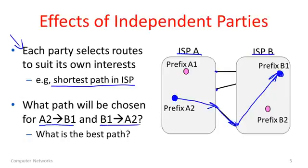Now what about the path from B1 to A2? Starting in B1, I similarly want to go through ISP A to reach prefix A2. I could use any of the three exit points. The closest one is the top one, so I go there, cross the link, and within ISP A I go directly to prefix A2.